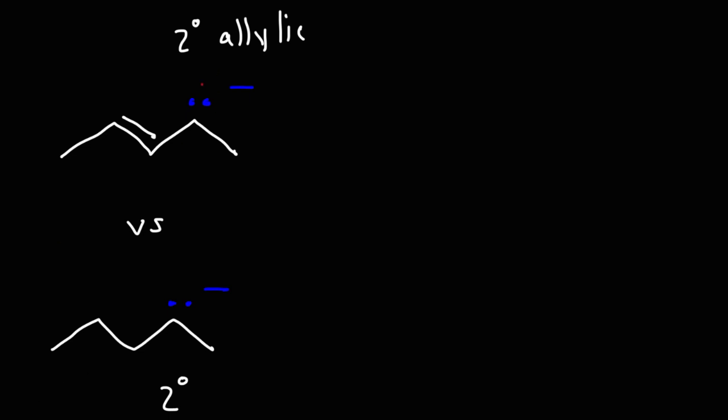So let's draw the resonance structure. We can take a lone pair here, move it here to form a pi bond, and then we can take the two electrons in this pi bond and push it on that carbon, moving the carbanion. So the resonance structure looks like this. The negative charge basically jumped two carbons to the left, and the double bond switched places with where the carbanion was.